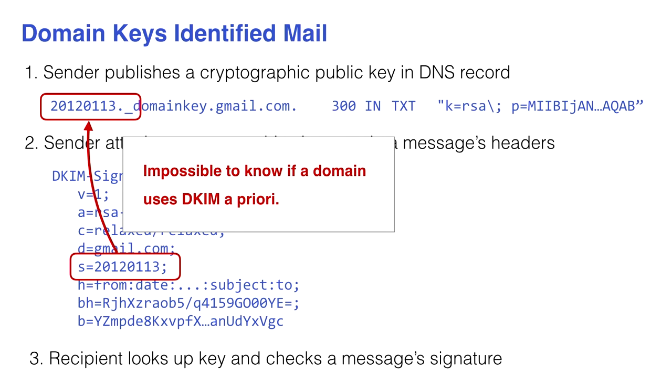So we deployed DKIM, but it has this rather obvious flaw: any attacker just removes the signature and the mail is delivered. Some big mail providers worked around this by caching responses — knowing that everything from Yahoo has had a DKIM signature, so a message probably should have one too — but it was a wishy-washy kind of configuration.